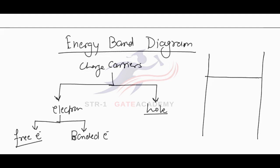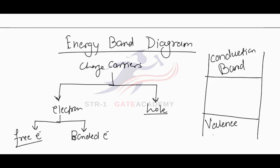An energy band diagram basically consists of three energy bands: one called the conduction band, one called the valence band, and an energy band which separates both the conduction band and the valence band, called the forbidden band.